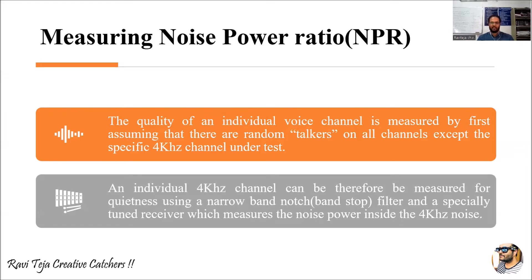Using a filter called a narrow band notch or band stop filter, we measure the quietness of that particular channel kept separately for the test, which is of 4 kilohertz frequency. This is specially tuned — the receiver measures the noise power inside the 4 kilohertz channel, determining how much noise power is present in that particular frequency band using a tuned receiver.